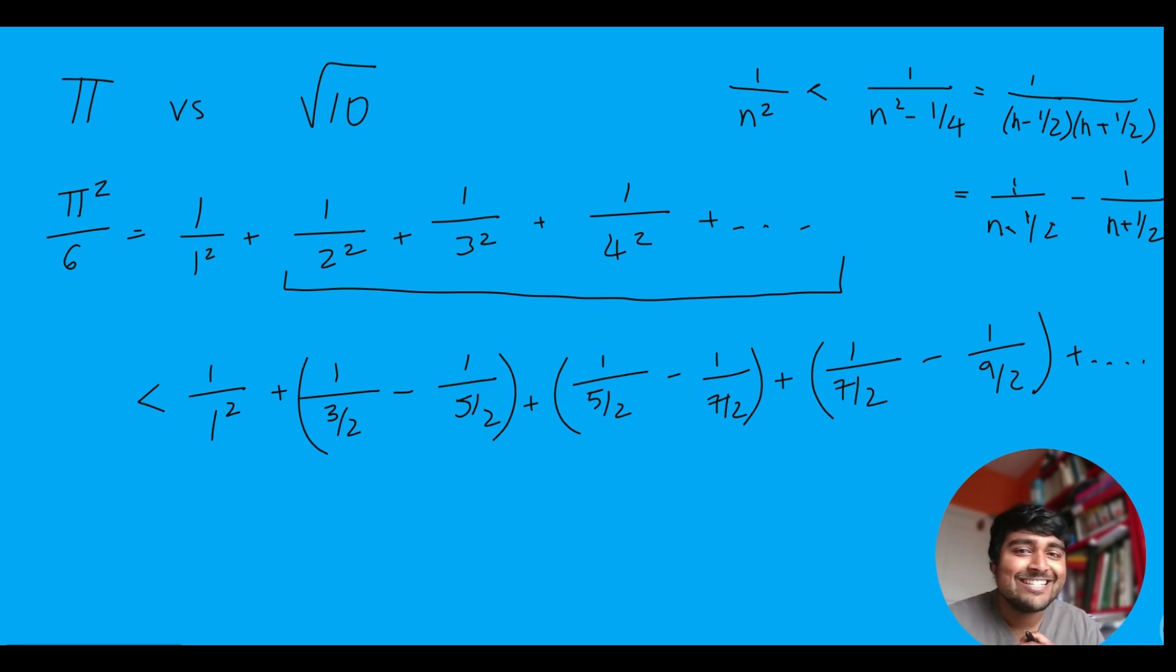But you may have already noticed, this is just what we call a telescoping sum, where loads and loads of terms cancel out. So you can see here, we've got minus 1 over 5 over 2, but then a plus 1 over 5 over 2 there. So those are going to cancel out.